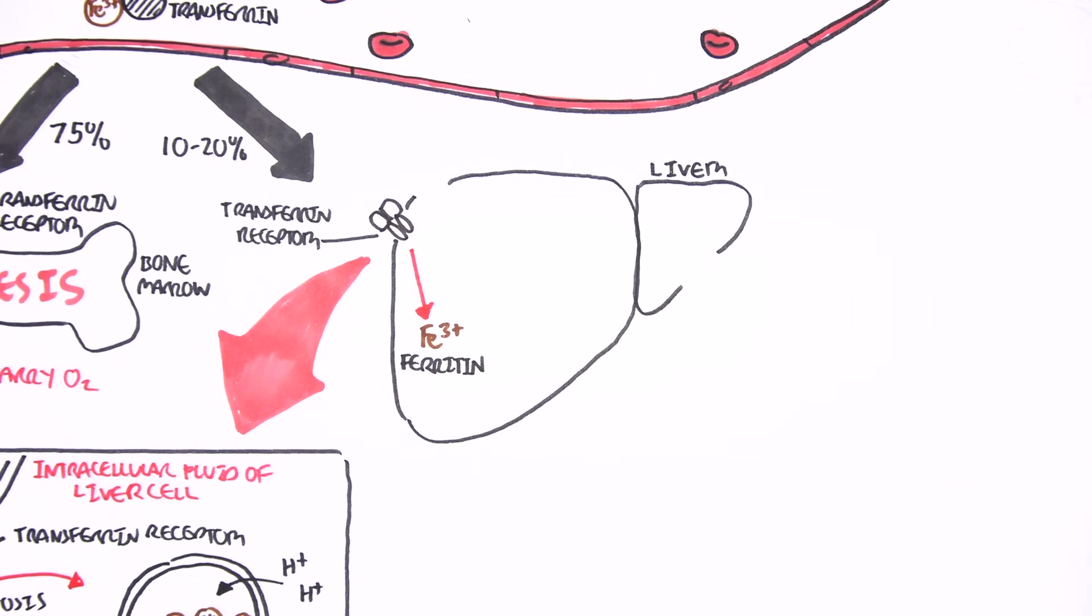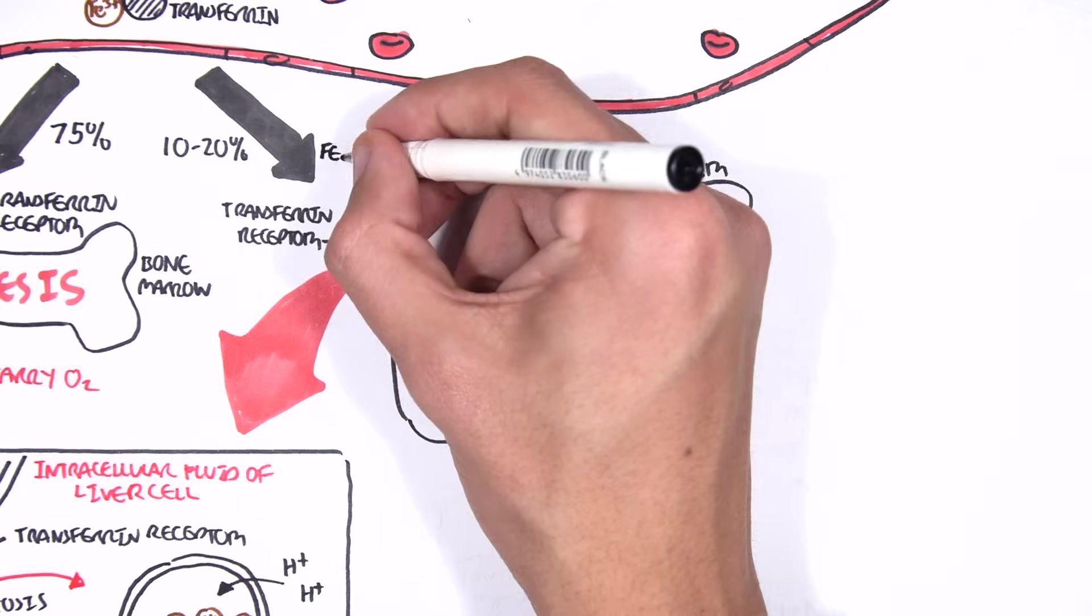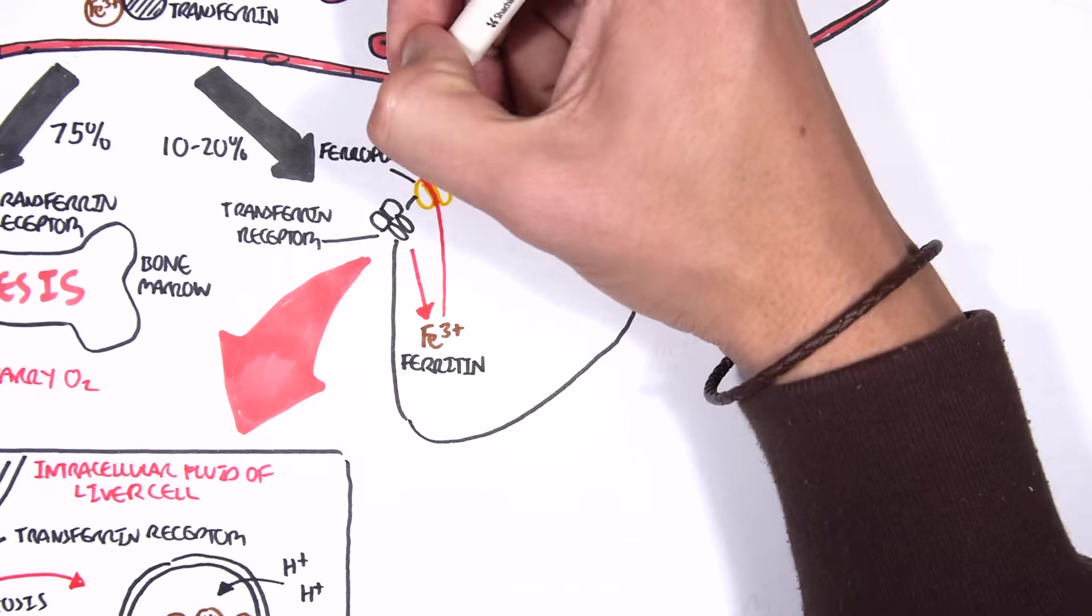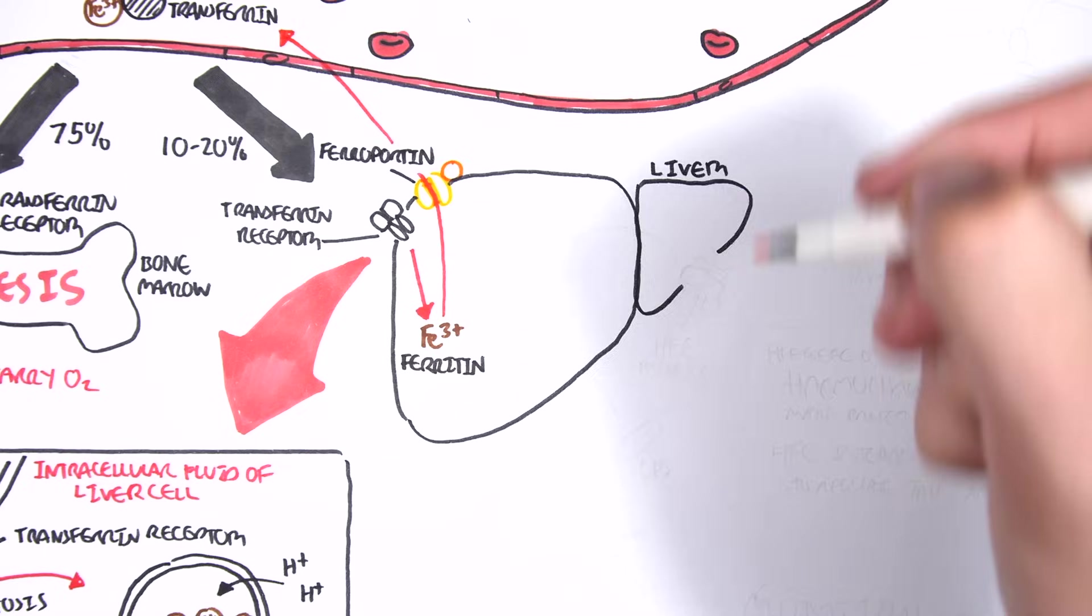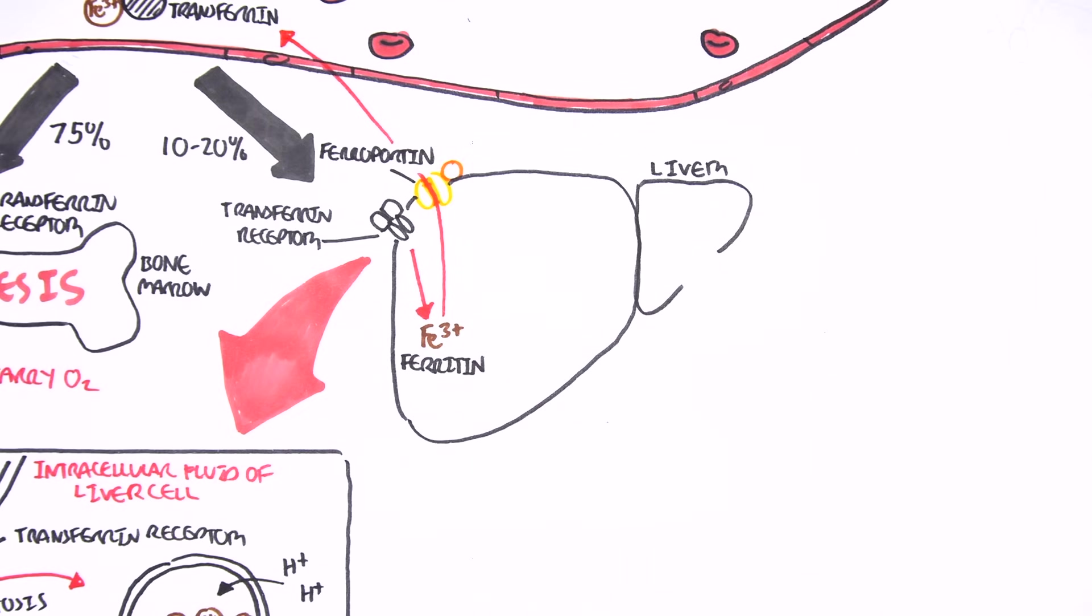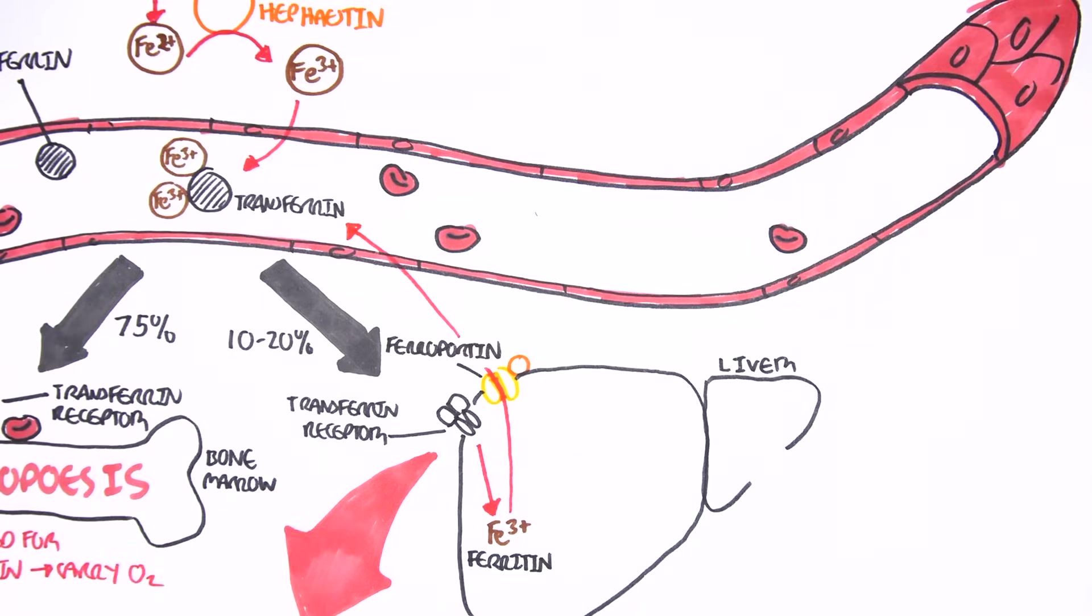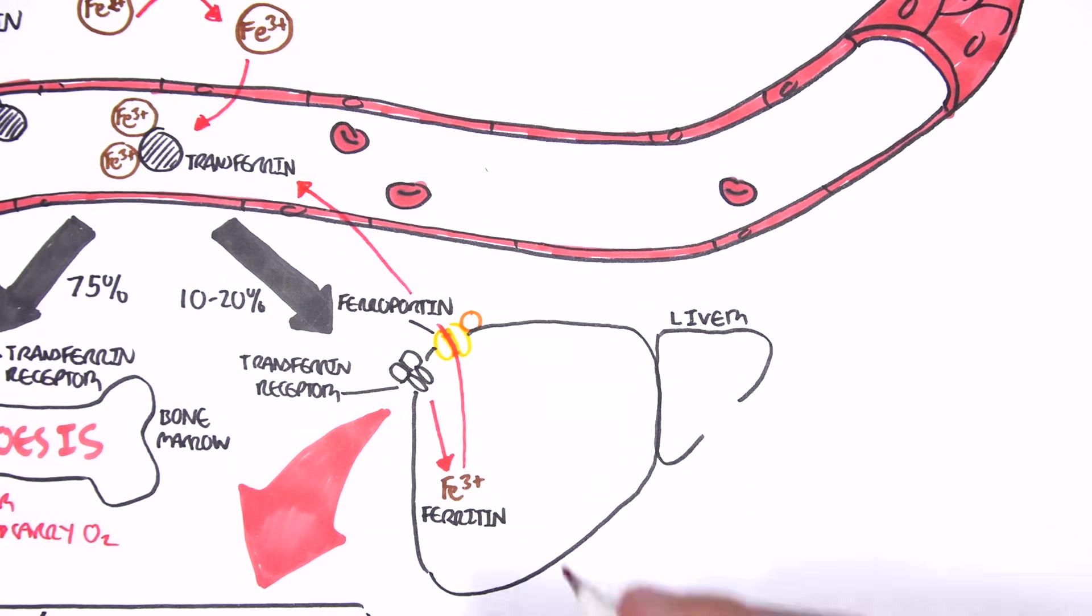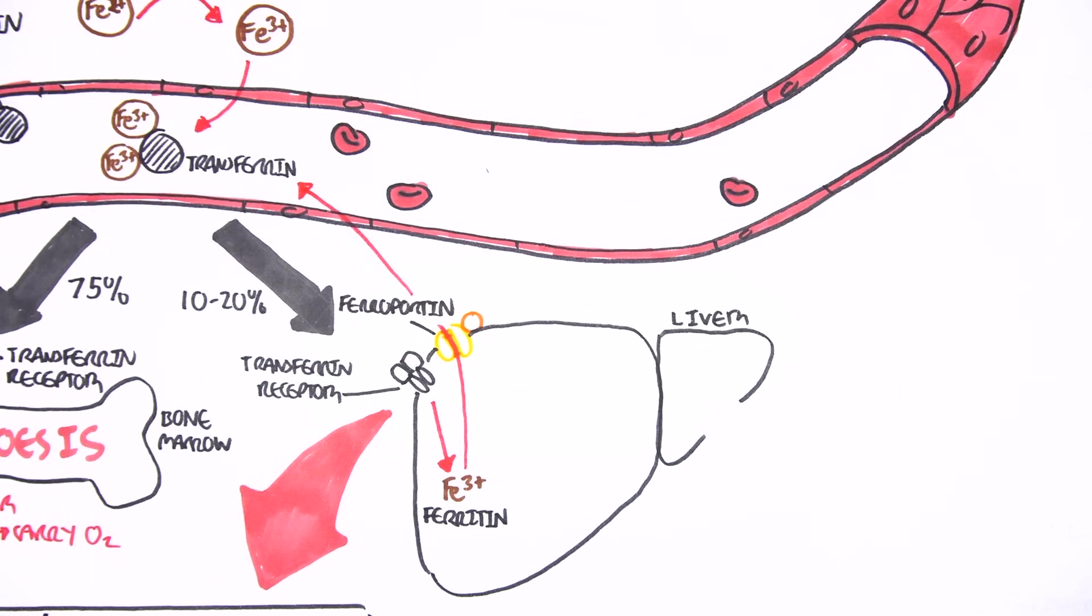So, here, as I've drawn in the liver, iron is stored as ferritin. The liver can also release iron back into circulation through the ferroportin transporter. And, the iron is released into circulation bound to transferrin as well. Now, that we've learned how iron is absorbed, how iron is stored, and how iron is released into circulation, let us learn what factors regulate iron concentrations in plasma.